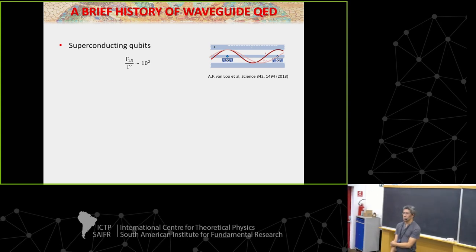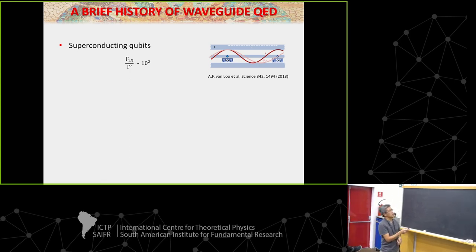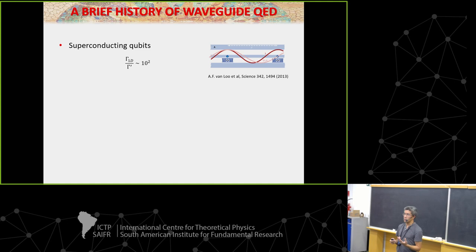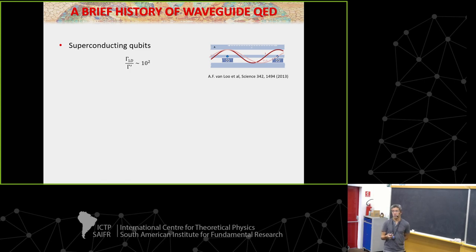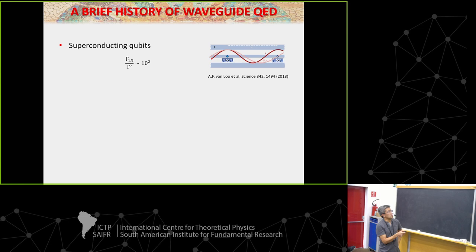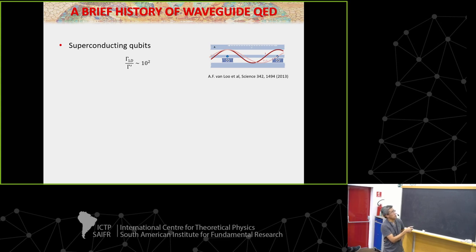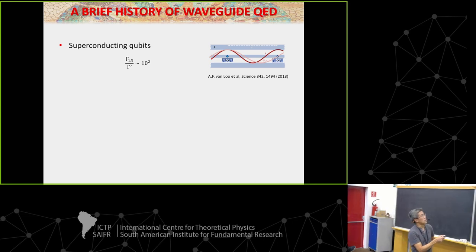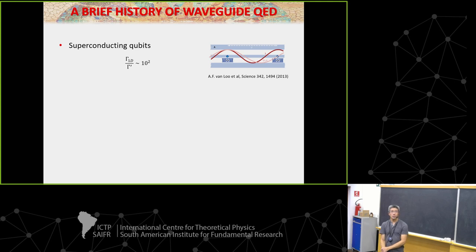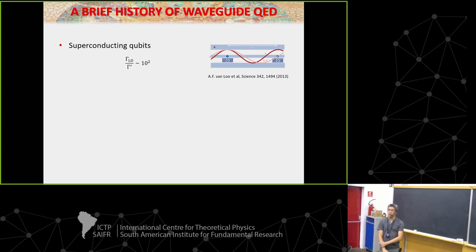Then there are superconducting qubits, which coming from atomic physics seems like cheating. Basically, you can have standard superconducting qubits like a transmon, which has a typical resonance frequency in the microwave regime. You simply design some kind of effective microwave waveguide or superconducting transmission line. Due to the peculiarities of microwave systems, you can very easily get branching ratios that are very high — at least 99% of the emission from a single transmon will go into the guided modes versus other channels. This starts to look like ideal 1D waveguide physics.